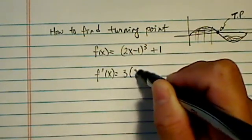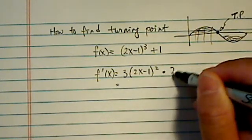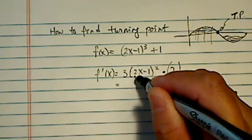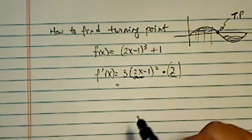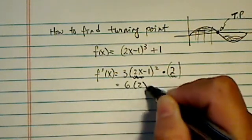So, first derivative is 3(2x-1)² times 2. Now, this 2 is important because this 2x part, you have to use chain rule to take derivative of 2x. So we end up with 6(2x-1)².